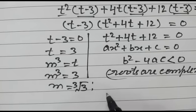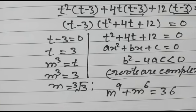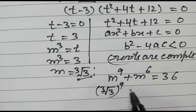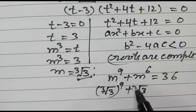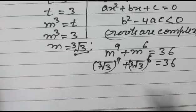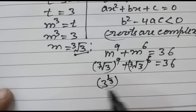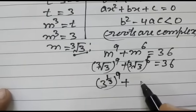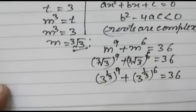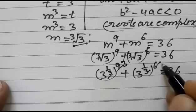Now we will verify our answer. m to the power 9 plus m to the power 6 is equal to 36. With m equal to the cubic root of 3, we substitute: cubic root of 3 to the power 9 plus cubic root of 3 to the power 6. Writing cubic root of 3 as 3 to the power 1 by 3: 3 to the power 1/3 whole power 9, plus 3 to the power 1/3 whole power 6, equals 36. Multiplying exponents: 9 divided by 3 gives 3, and 6 divided by 3 gives 2.